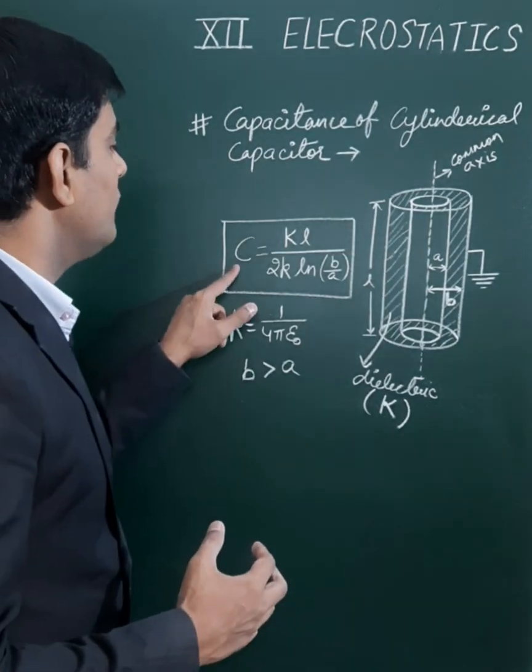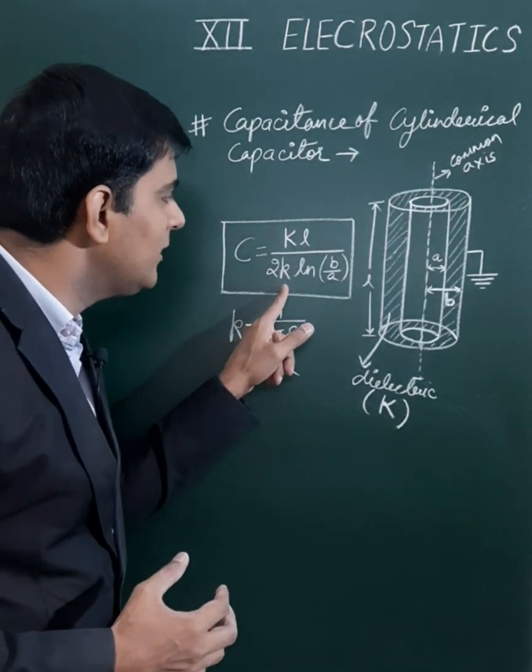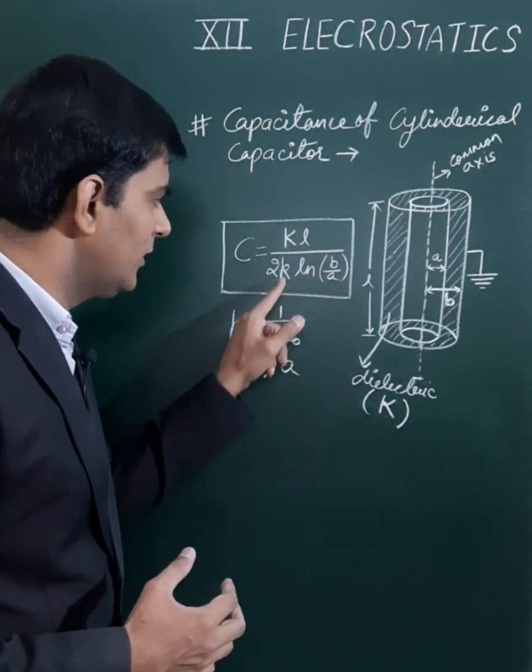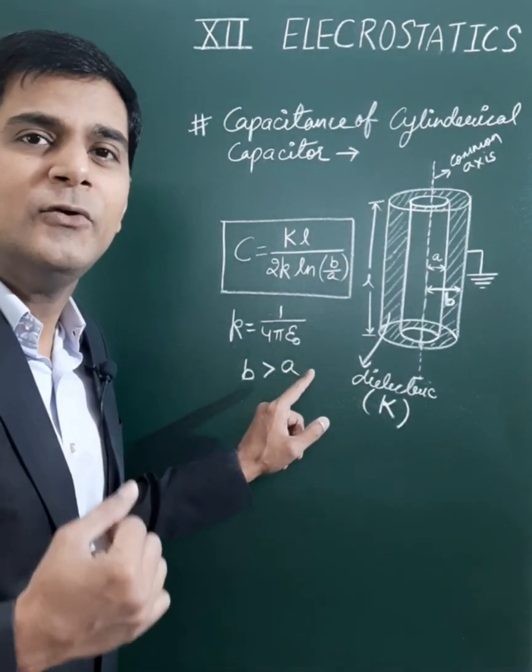will be C equals capital K into small n upon two small k ln b by a, where this small k is a constant which is one upon four pi epsilon naught. Its value is nine times ten to the power nine.